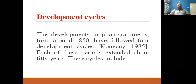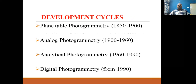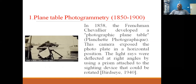The development of photogrammetry from around 1850 followed four development cycles, each period extending about 50 years. These cycles include: plain table photogrammetry, from 1850 to 1900; analog photogrammetry, 1900 to 1960; analytical photogrammetry, 1960 to 1990; and digital photogrammetry, from 1990 onwards. These are the four generational development cycles.